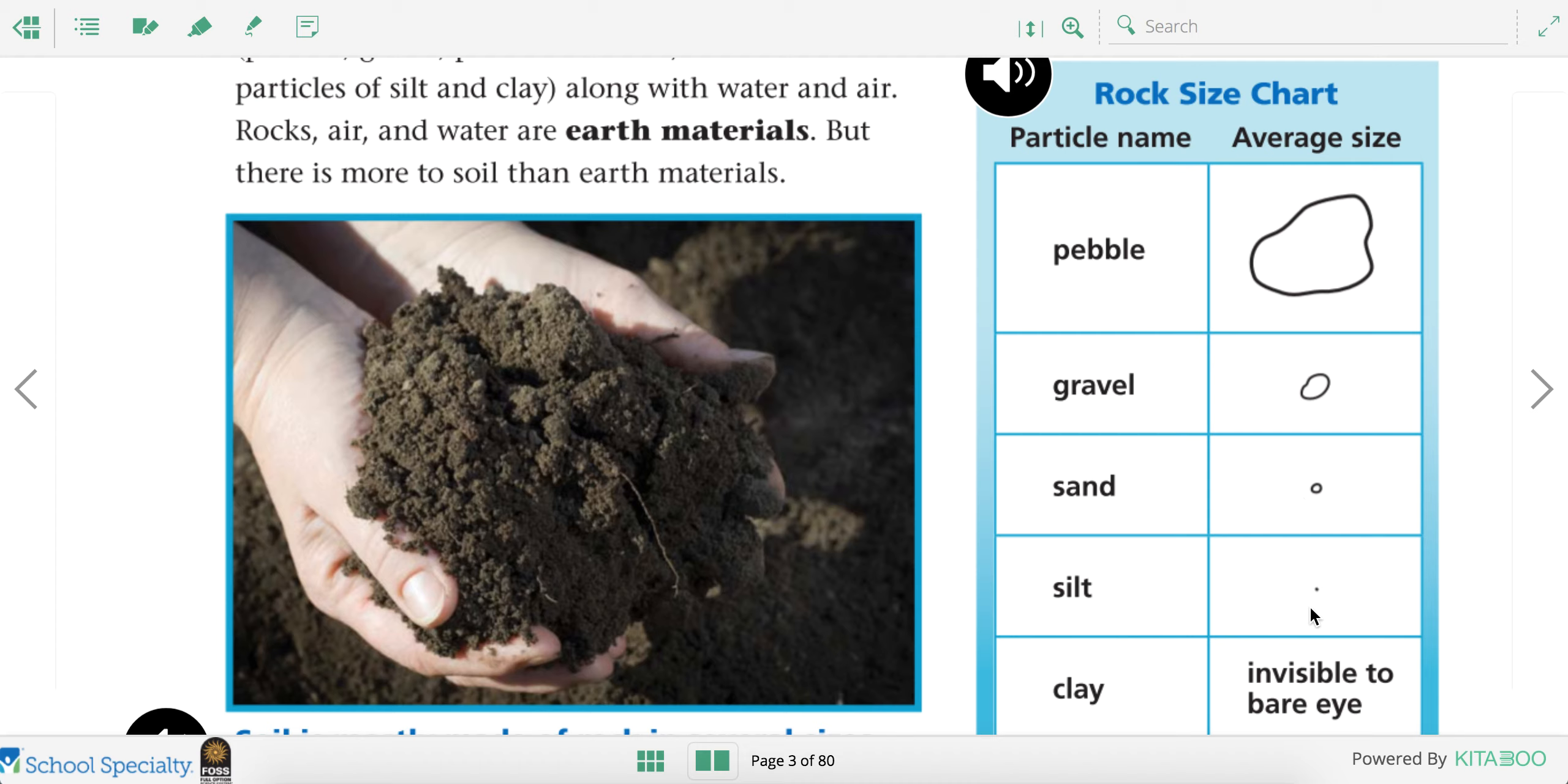Silt, super tiny. And clay is actually invisible to the bare eye. So you might see clay all mushed together. But when it's individual parts, they're actually too small for us to see with our eyes. We'd have to use a science tool like a microscope in order to see it.